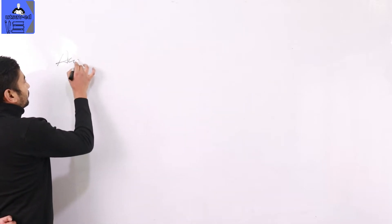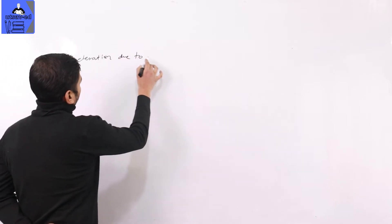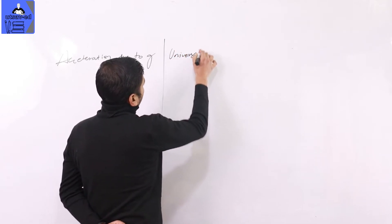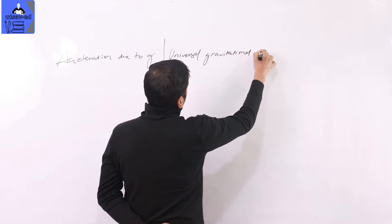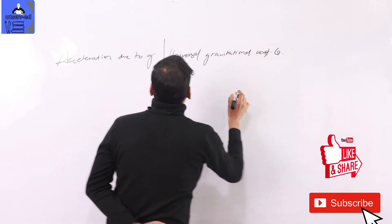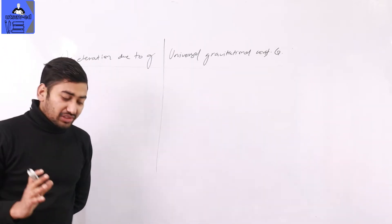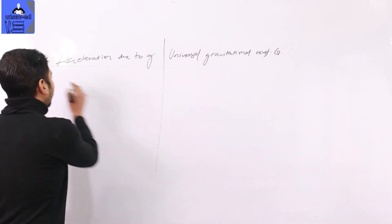Now we will talk about universal gravitation constant and acceleration due to gravity. So this is the main thing — acceleration due to gravity, or you can relate it to equilibrium.